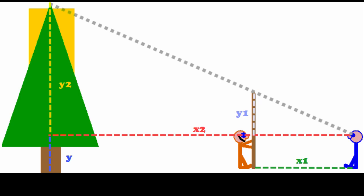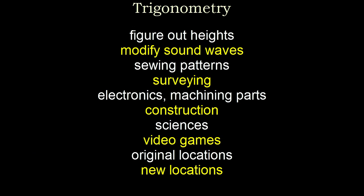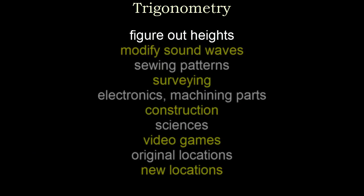y2, what we want to figure out, is the height of the tree minus the height to your eyeballs. The ratio between y2 and x2 is the same as the ratio between y1 and x1. Therefore, y2 equals y1 over x1 times x2. Once you calculate y2, add y, the height to your eyes, and you will know the height of the tree.